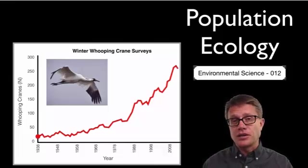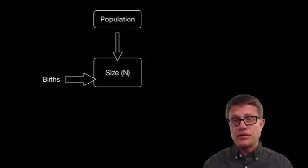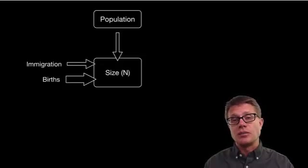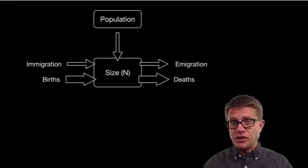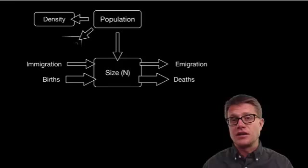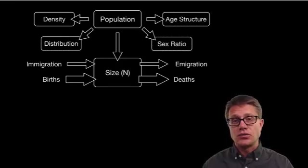The health of the population is dependent upon the size of the population. How do we increase the size? Through births and immigration—new individuals coming into the population. How do we decrease it? Through deaths and emigration. These things contribute to what is called the intrinsic growth rate. It's not the only characteristic. We also have density and distribution, sex ratio, and age structure.